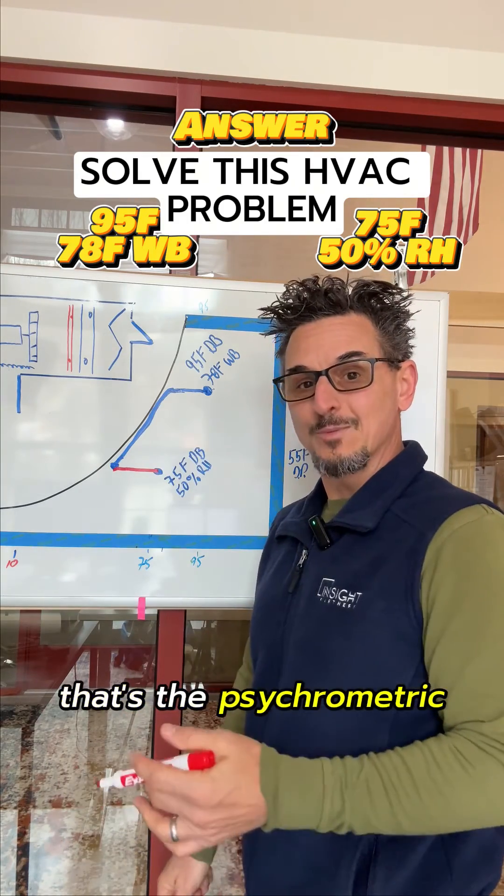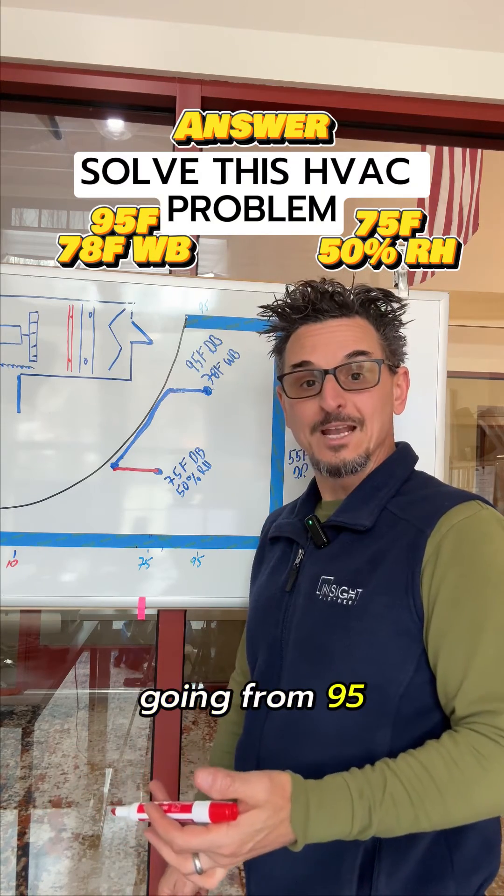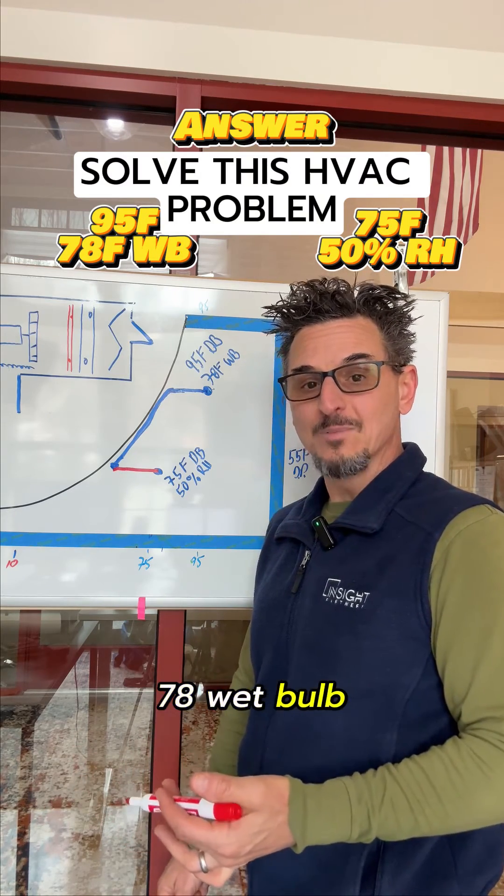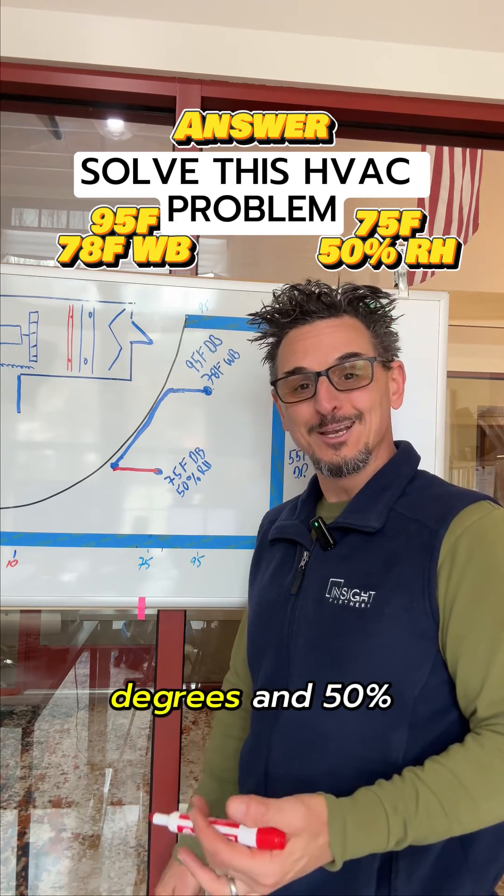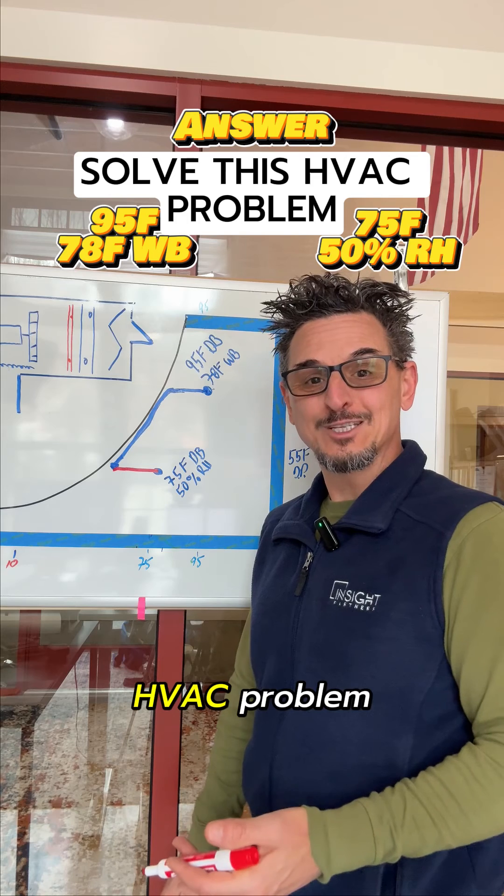So there you go. That's the psychrometric process for cooling 100% outdoor air and going from 95 degrees, 78 wet bulb down to 75 degrees and 50%. Thanks for watching and stay tuned for the next HVAC problem.